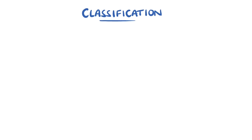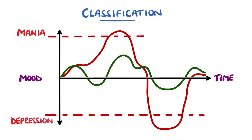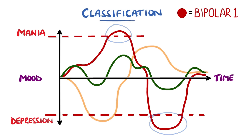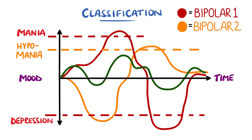Based on these, there are three main types of bipolar disorder. Bipolar 1 can be diagnosed with a single episode of mania, as it is assumed that a depressive episode will eventually occur. Bipolar 2 requires at least a single depressive episode and one hypomanic episode.